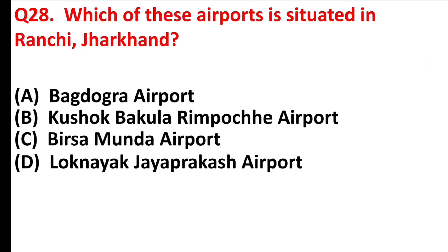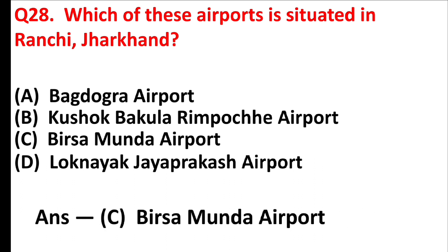Which of these airports is situated in Ranchi, Jharkhand? Answer is Option C: Birsa Munda Airport.